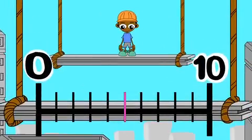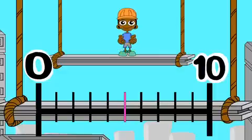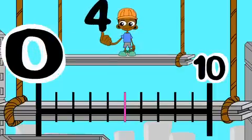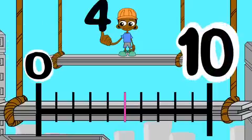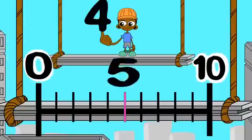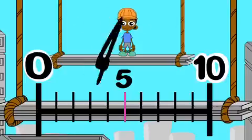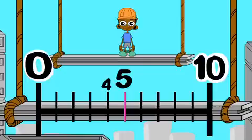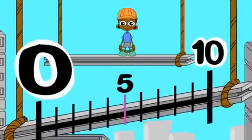Sometimes the nearest 10 is 0. Let's round 4 to the nearest 10. The benchmarks are 0 and 10. The midpoint is 5. 4 is less than 5. So, to the nearest 10, 4 rounds down to 0.